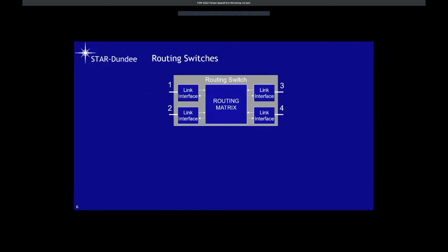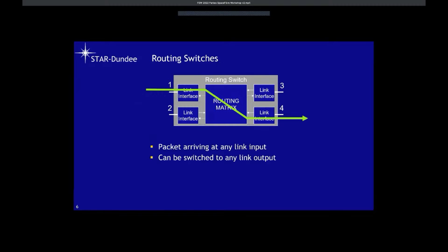Here's an example: a packet arriving at port one gets switched to output port four, from three gets switched to output port one, arriving at port two it gets switched to output port three — all going on in parallel. But if a packet arrives at port four wanting to go out of port one, it's stopped because port one is already in use. We have to wait until the packet going out of port one finishes.